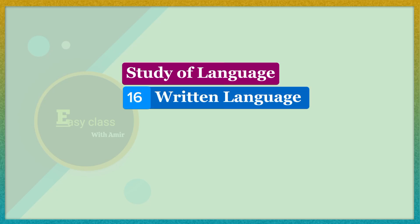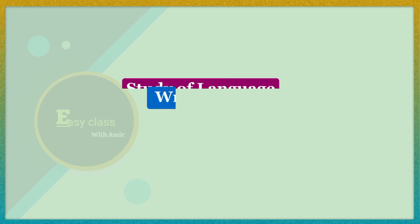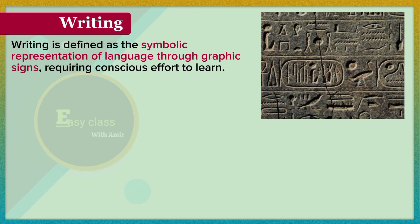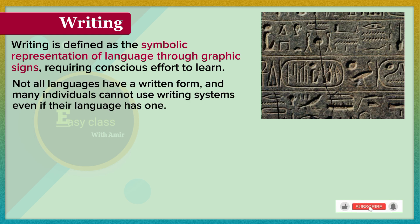Study of Language, Chapter 16: Written Language. Writing is defined as the symbolic representation of language through graphic signs, requiring conscious effort to learn. Not all languages have a written form, and many individuals cannot use writing systems, even if their language has one.